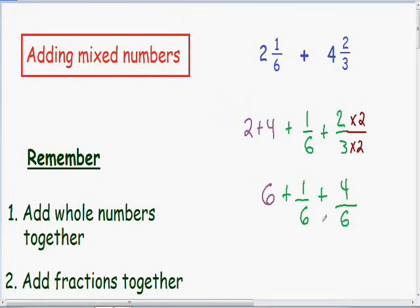So now that we have a common denominator, these two fractions can be added quite easily. Since our denominator is 6, when we add these fractions together, our denominator is also going to be 6.